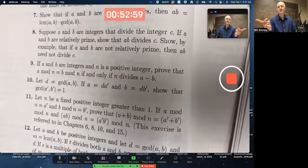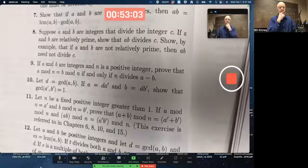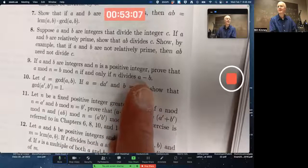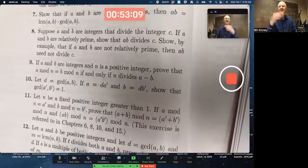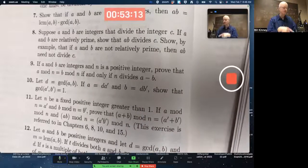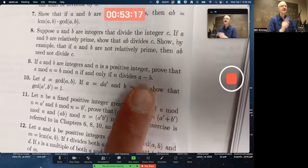The quotients, the Qs, could be different. You're trying to show N divides A minus B. You've got these two equations involving A and B. Maybe you should try to subtract it. Because you're trying to deal with A minus B. It's not too bad.